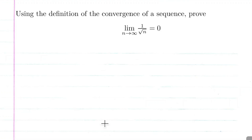We're going to use the definition of the convergence of a sequence to prove that the limit as n approaches infinity of one over the square root of n is equal to zero.